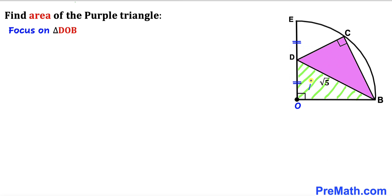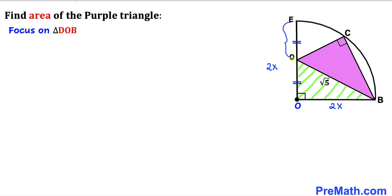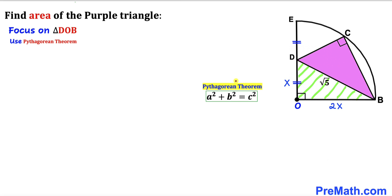Let's focus on right triangle DOB, whose hypotenuse is square root of 5. We want to calculate side lengths OB and OD. We can see that OB is a radius of the quarter circle — let's call it 2x, so the other radius is also 2x. Since ED equals OD, and those two segments are equal, this length is x and OD is x as well. Our task is now to calculate the value of x.